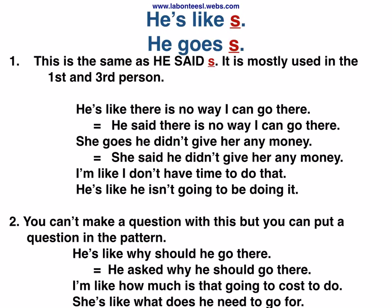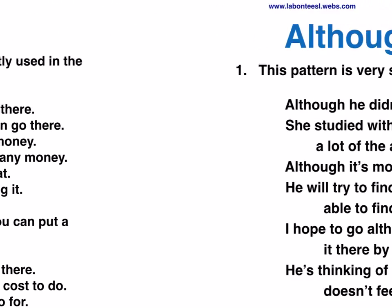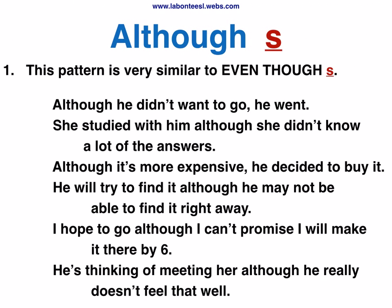She's like, what does he need to go for? I'm like, how much is that going to cost to do? Pattern: 'Although' sentence — this is very similar to 'even though' sentence. Although he didn't want to go, he went. She studied with him although she didn't know a lot of the answers.